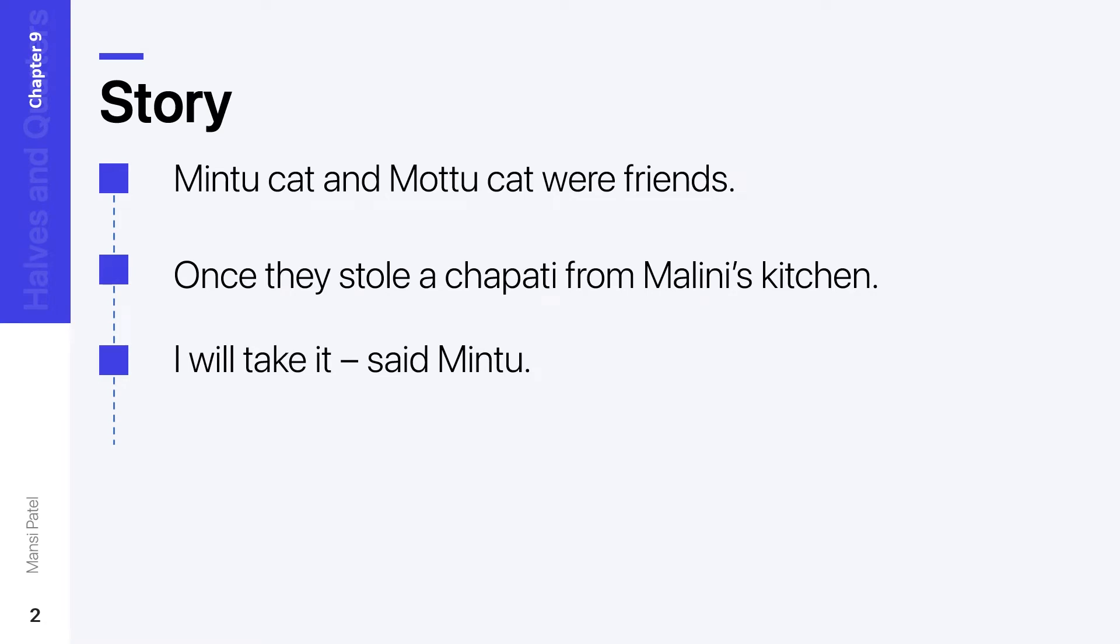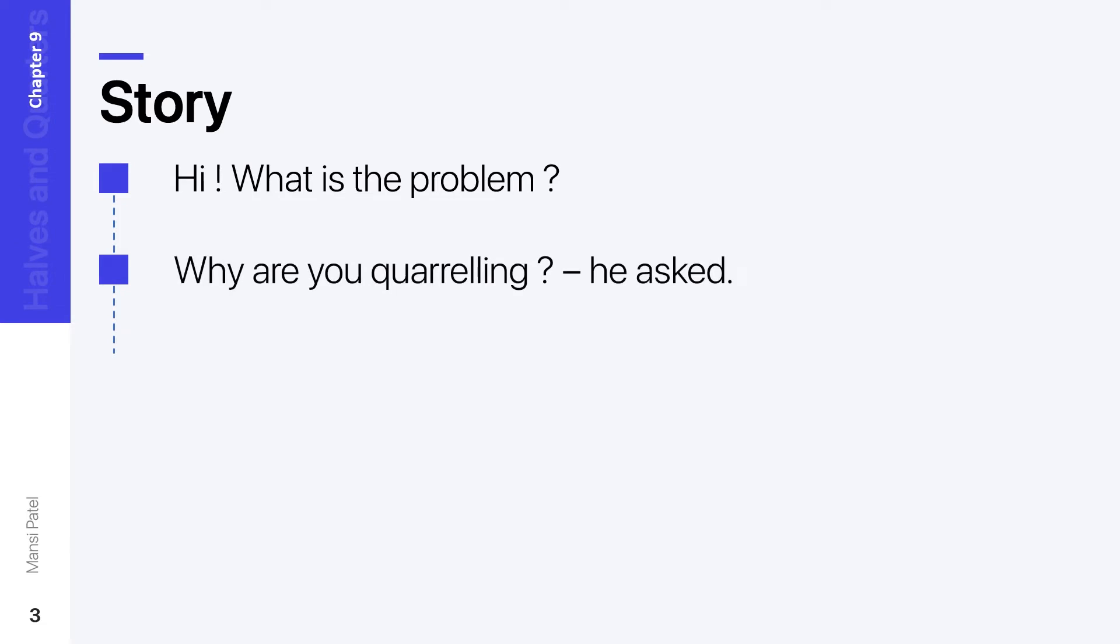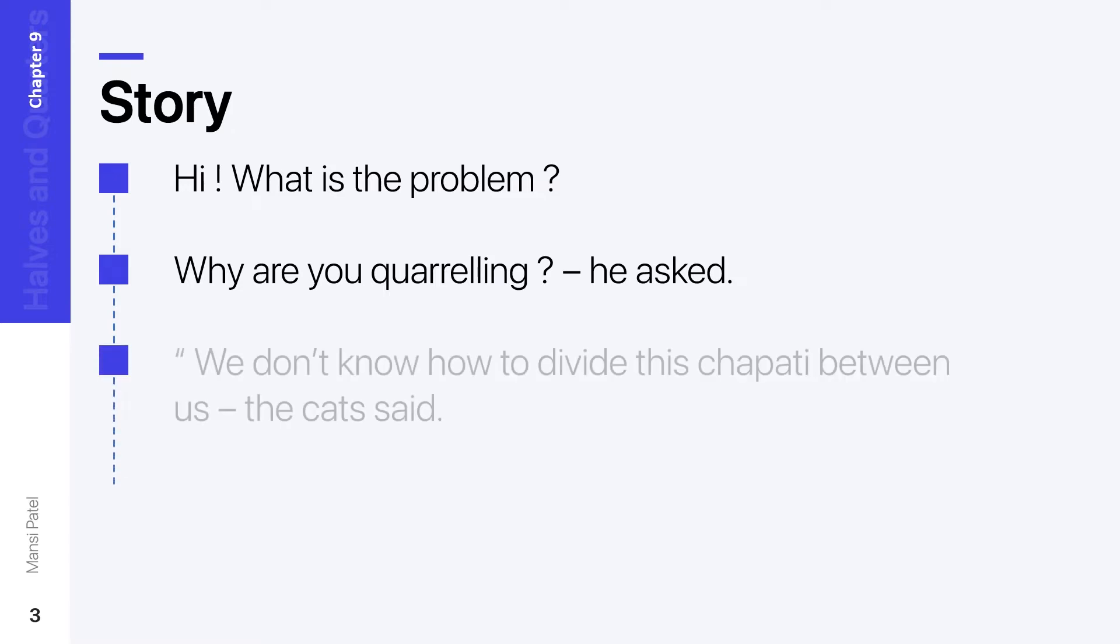Mintu cat says that I will take it. After that Motu cat says no no, I will take it. Now they both started quarreling. They both were quarreling. At the same time Tittu monkey came back. When he came back he asked, hi what is the problem? So after that he was asking why you both have started quarreling. So the cats said that we don't know how to divide this chapati between us. The cats said that thing to the monkey, that we don't know how we have to divide this chapati.